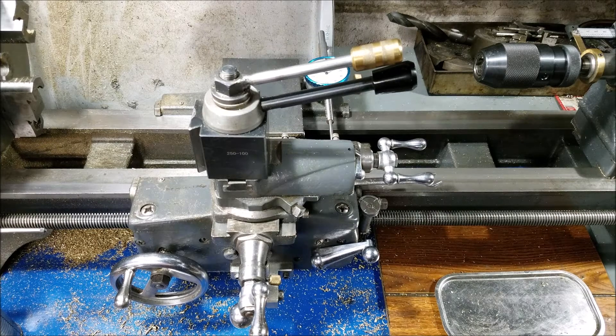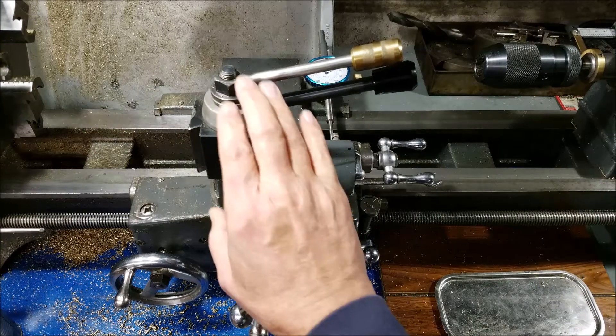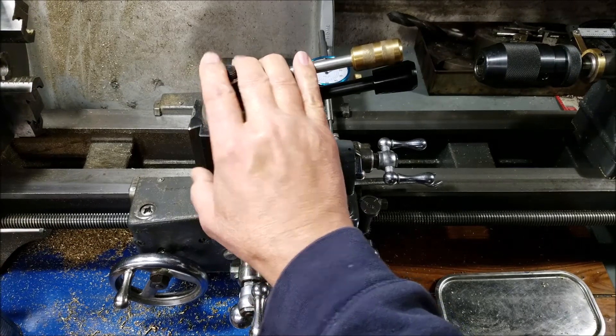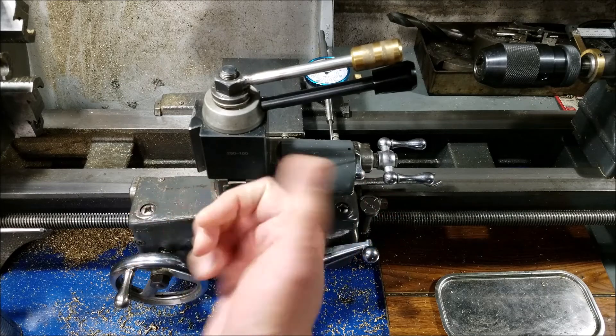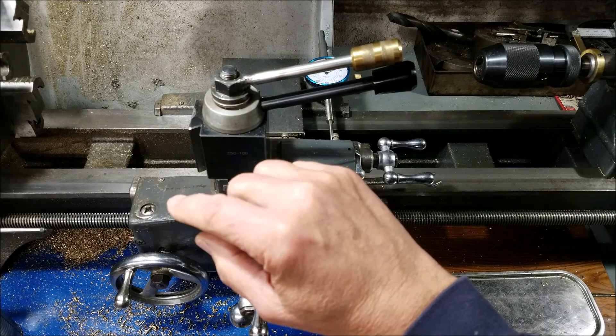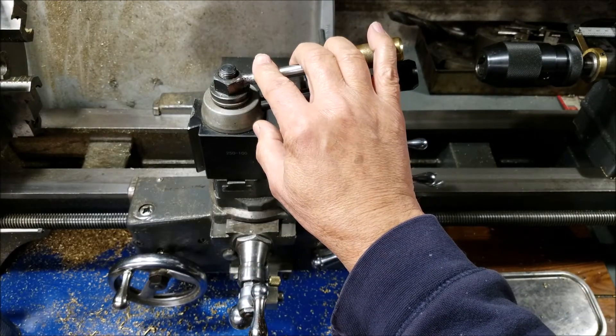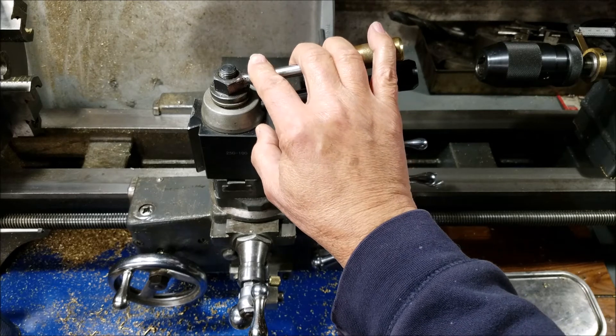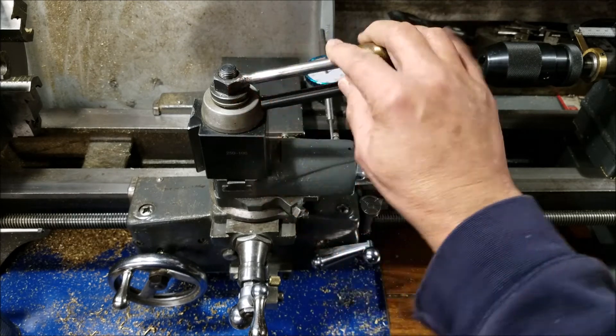We're going to give a quick demo here of how this works. One thing I want to point out before I start is, since we are driving the lathe now from the right end of the lead screw, we need to disconnect the quick change box on the left side or the change gears on the left side of the lathe. You don't want any resistance on the left side of the lathe when you're turning it with the power feed.